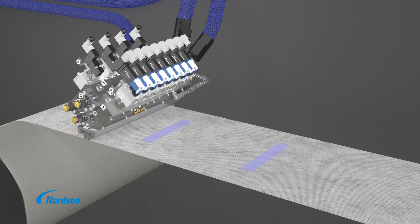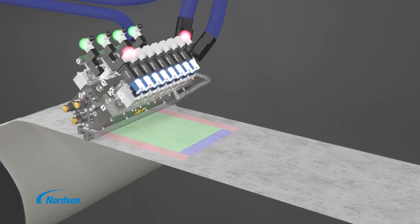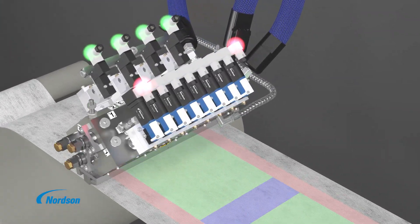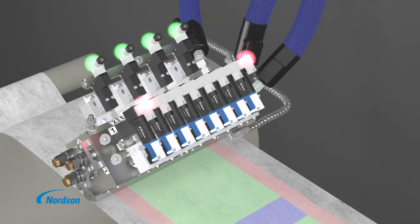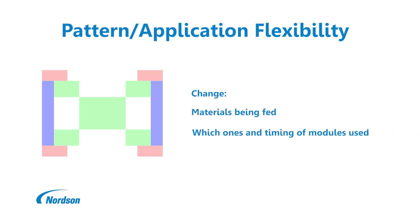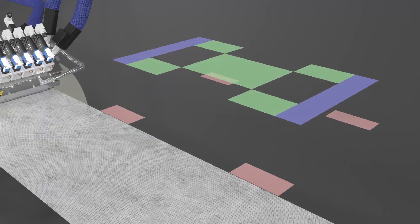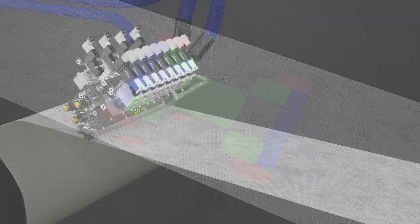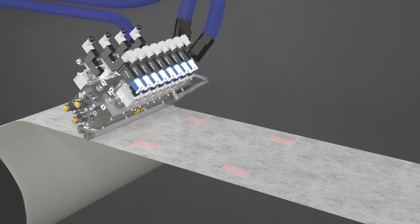Product performance can be improved while reducing and optimizing material use. Changing the material being fed and the timing of modules dispensing material can produce a different pattern even when using the same slot nozzle. This example depicts the possibility of applying different materials and/or different material rates being dispensed to combine applications or to optimize performance.